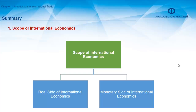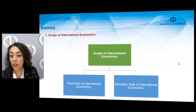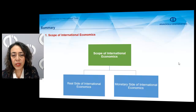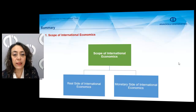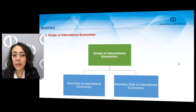Regarding the first title, the scope of international economics, international economics is divided into two parts. The first part is the real side of international economics and the second part is the monetary side. On the real side, we deal with international trade analysis where we do not take into consideration money — in other words, we do not consider the exchange rate and its effects. So we skip money and analyze international trade in real terms.